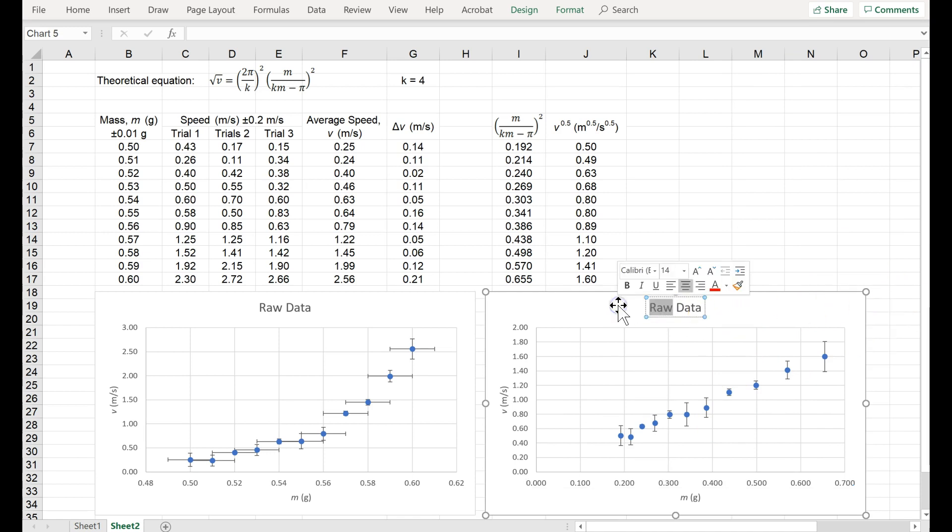So, this is now final function, maybe, or process data, and no longer is this speed, this is like speed to the 0.5, and I need to do the same for my units, right?